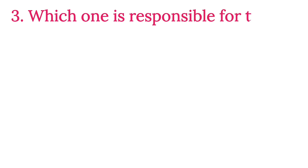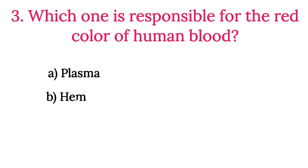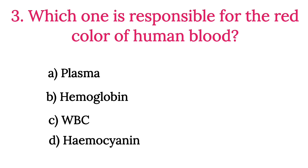MCQ Number 3: Which one is responsible for the red color of human blood? Option A: Plasma. Option B: Hemoglobin. Option C: WBC. Option D: Hemocyanin. So the correct option is Option B, Hemoglobin.